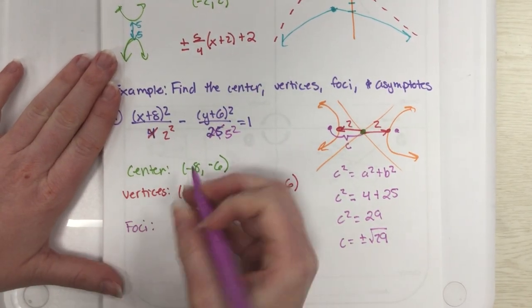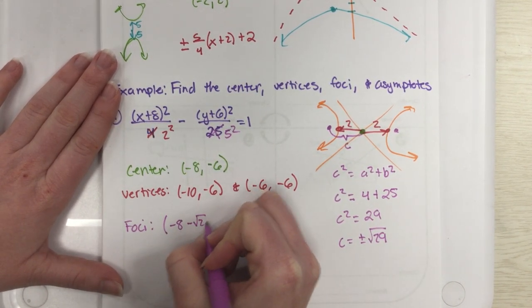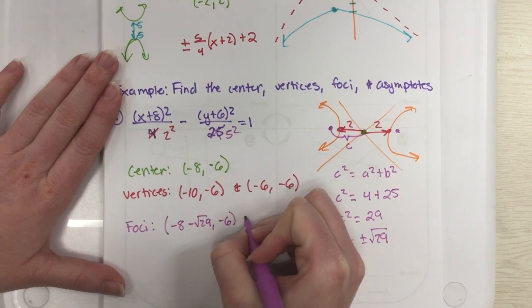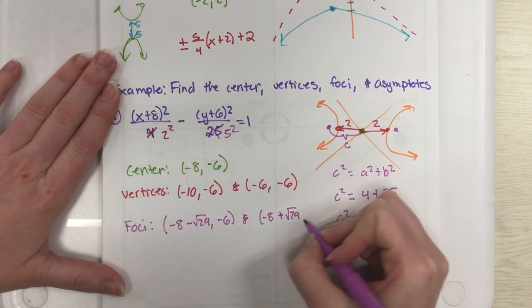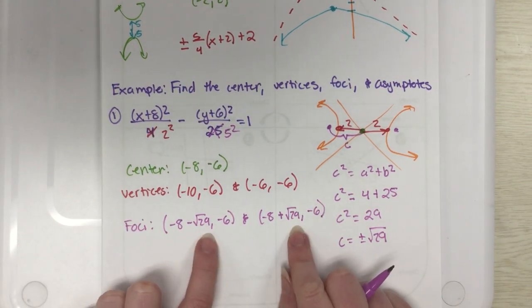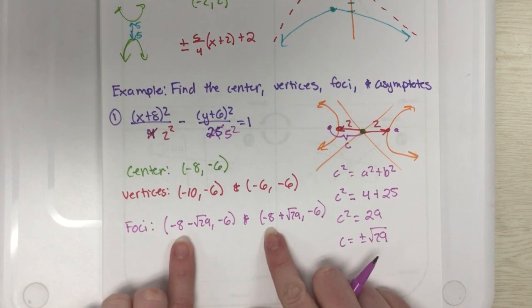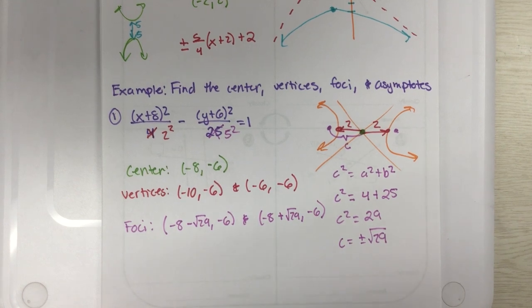So, my foci is going to be negative 8 minus square root of 29 comma negative 6, and negative 8 plus the square root of 29 comma negative 6. Do you remember if it's a square root that you can't simplify, you can't combine it with the whole number, you just write out that expression right there. All right, and so I hope we're doing okay so far. It's not too bad, hopefully.